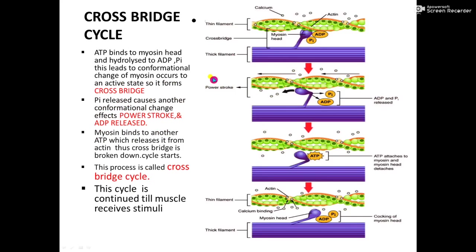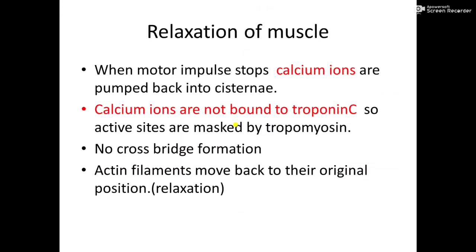To remember: the cross bridge cycle is very important. It occurs as long as ATP is supplied, and ATP is supplied from the mitochondria present in the sarcoplasm. This is about the contraction of the muscle. Hope you understand muscle contraction.